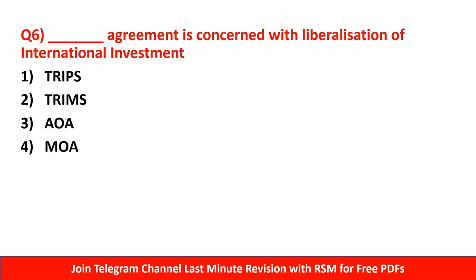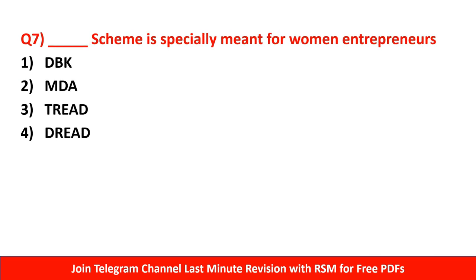Question number 6: Dash agreement is concerned with liberalization of international investment — TRIPS, TRIMS, Agreement on Agriculture, or Memorandum of Association. The question is about investment. TRIPS is Trade Related Intellectual Property Rights; TRIMS is Trade Related Investment Measures. AOA is Agreement on Agriculture under WTO, and MOA is Memorandum of Association — neither fits. The right answer is TRIMS — Trade Related Investment Measures.